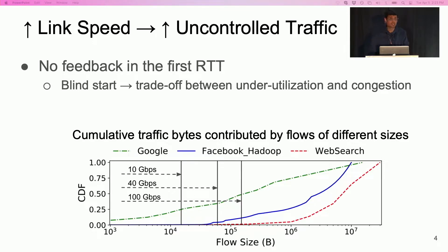This figure shows the cumulative traffic contributed by flows of different sizes for three industry workloads. The vertical lines represent the bandwidth delay product for 10, 40, and 100 Gbps network with a 12 microsecond RTT.